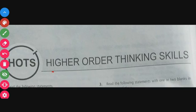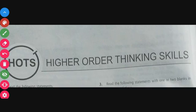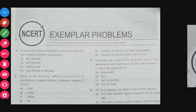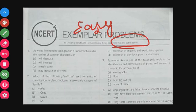Next are HOTS — Higher Order Thinking Skill — questions. These are very high-order, tough questions, with about 5 questions per chapter. If you prepare these questions, you can easily crack them in the exam. Next, Exemplar problems are mostly easy but have more than one correct option.